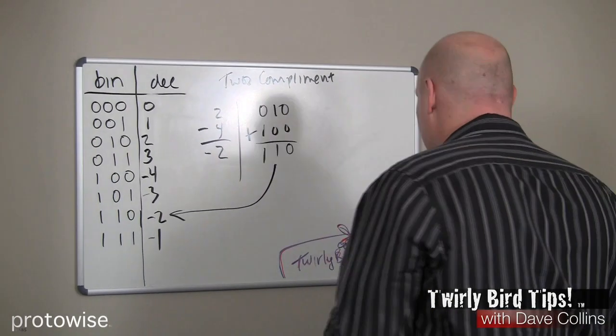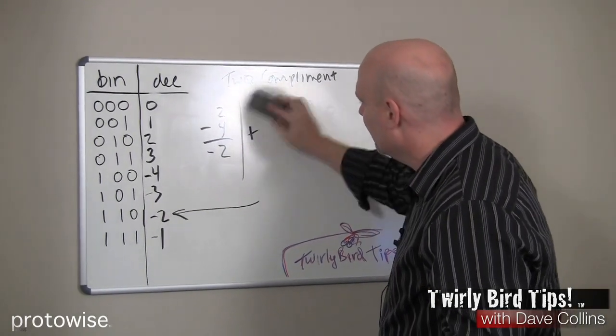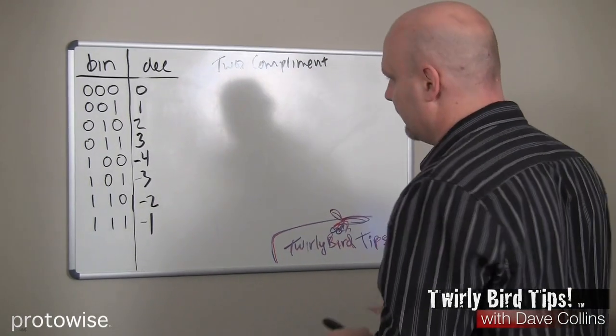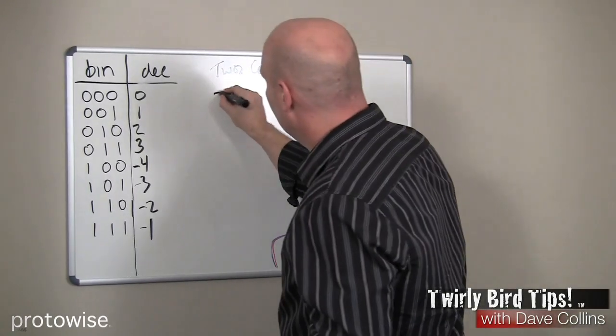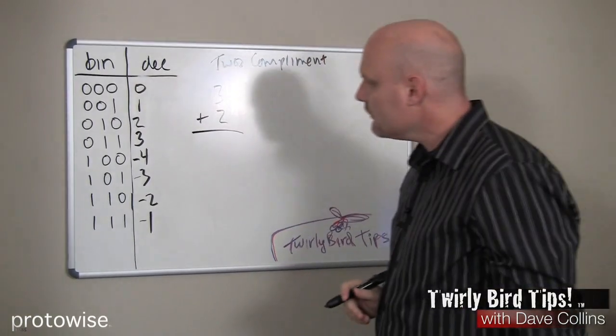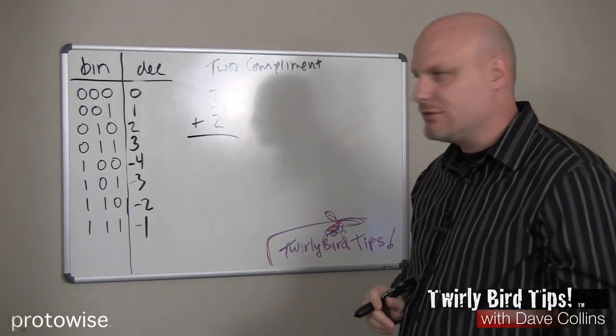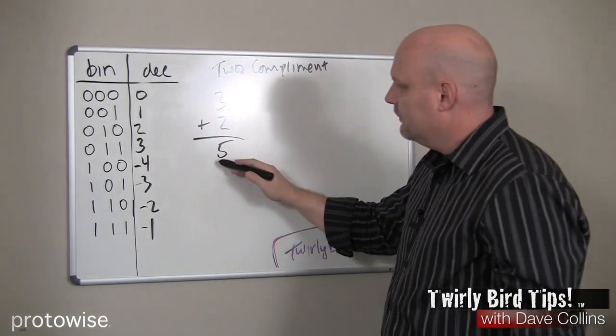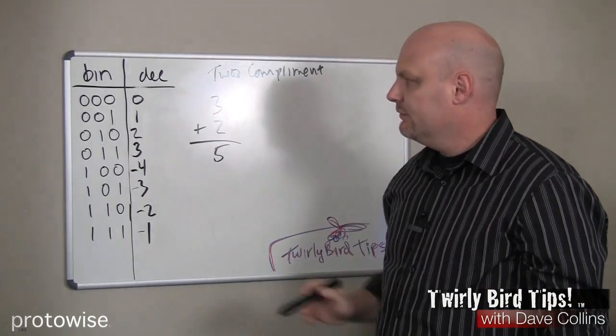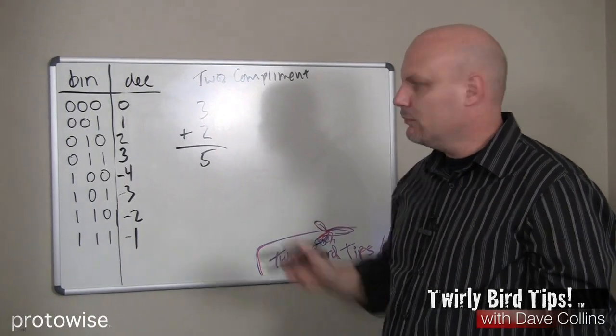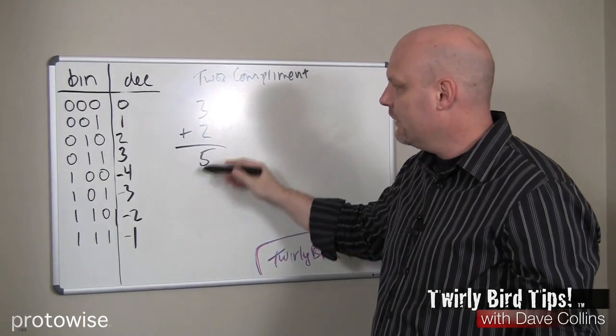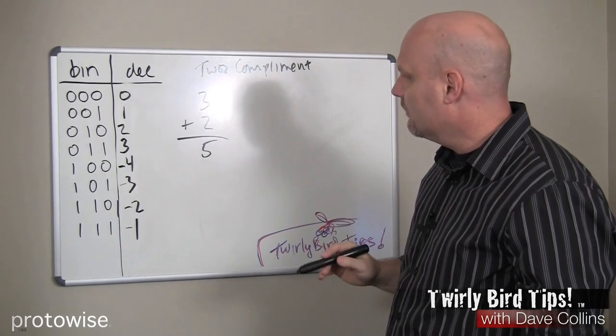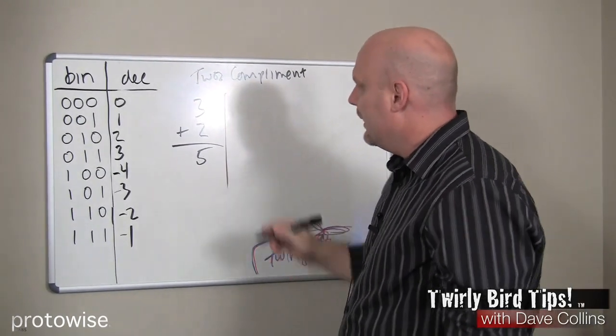Now if you're thinking ahead, you've probably already thought about a scenario that could pose a problem with a situation like this. Let's look at a simple 3 plus 2. On the face, it doesn't look like it's going to be a problem. We know that 3 plus 2 is 5. But notice we don't have a 5 in this particular 3-bit system. We have representations for both 3 and 2, but we don't have a way to represent the number 5 in this particular system with two's complement.